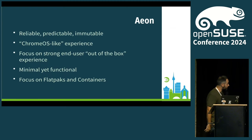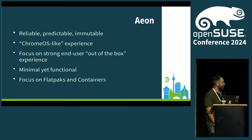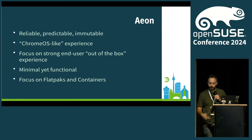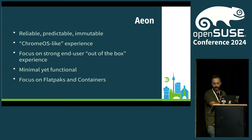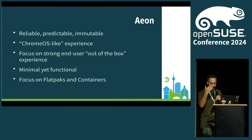Now let's talk about Aeon. Aeon is the immutable atomic distribution based on Tumbleweed and MicroOS. It's really nice — I like it because it's more like an appliance target, trying to be more like Chrome OS, fire and forget. It very much focuses on the out-of-the-box experience. It's minimal and highly focused on Flatpak and containers.